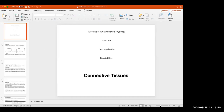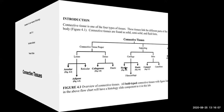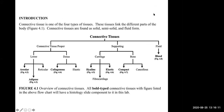This is exercise four — connective tissue. We talked about epithelial tissue and now we're going to talk about connective tissue. Connective tissue is the most diverse — it can be solid, semi-solid, or fluid. This includes your adipose, areolar filler tissue, all of your cartilage and bone, and also your blood. Connective tissues are the most abundant in the body. The bold-typed connective tissues with a figure listed will have a histology slide component in this lab.